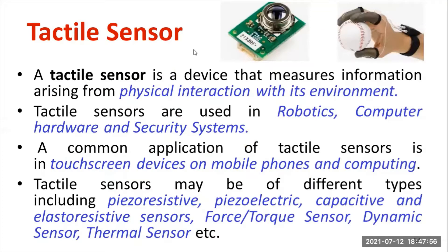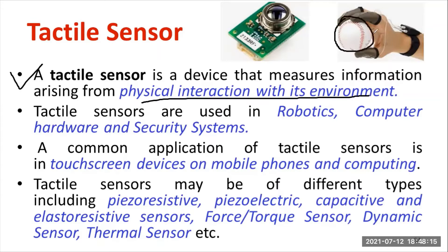Let's go through what is a tactile sensor. First and foremost, let's understand the definition. A tactile sensor is a device that measures information arising from the physical interaction with its environment. For example, you can see this is a biomedical sensor — it senses body pressure, temperature, etc. You can also see the 2133 RF, which is one of the most important temperature sensors and is basically a tactile sensor. Tactile sensors are used in different areas such as robotics, computer hardware, and security systems.